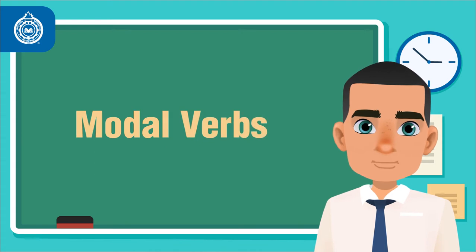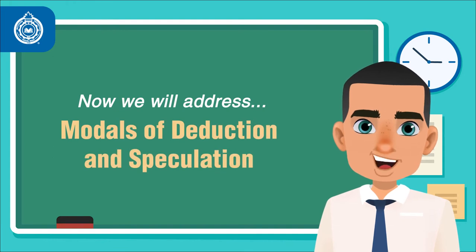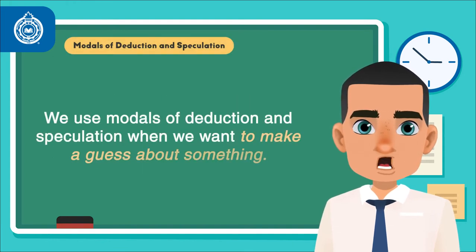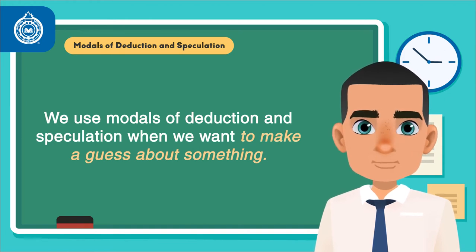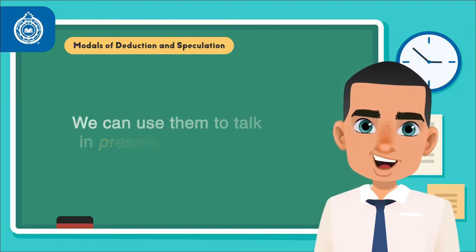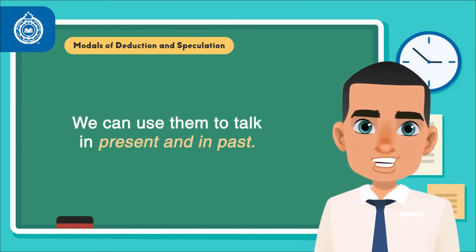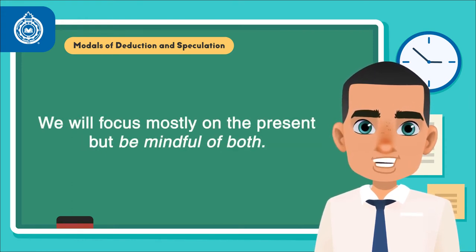In previous levels, you have studied the modal verbs. Now we will address modals of deduction and speculation. We use modals of deduction and speculation when we want to make a guess about something. We choose the verb depending on how sure we are. We can use them to talk in present and in past. We will focus mostly on the present but be mindful of both.